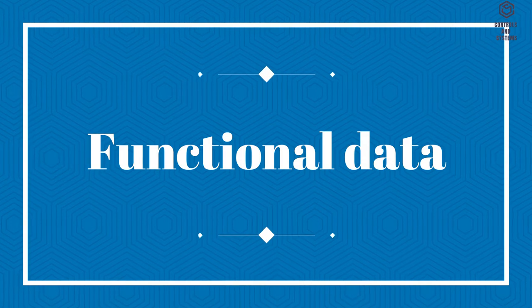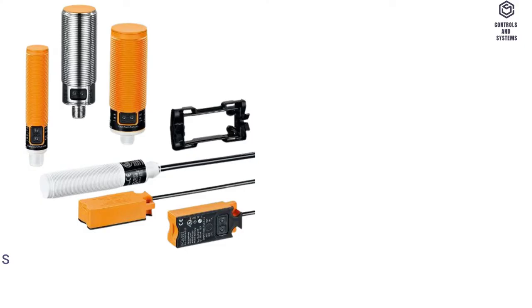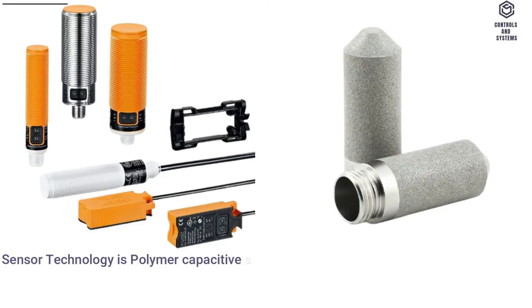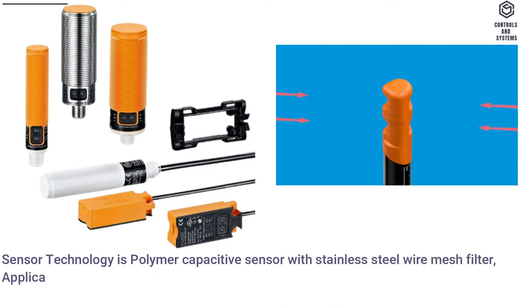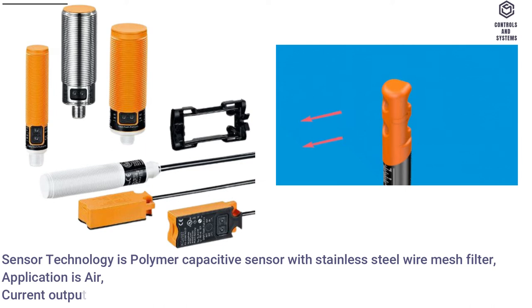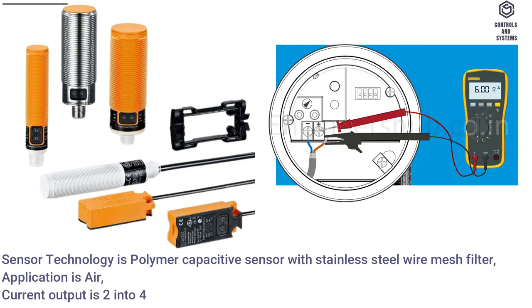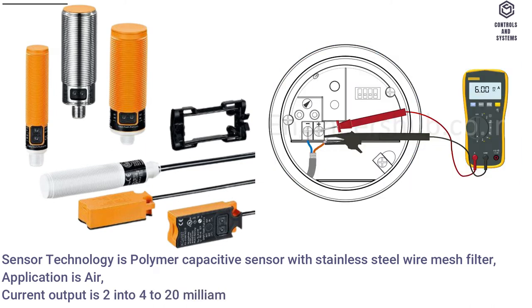Functional Data: Sensor technology is polymer capacitive sensor with stainless steel wire mesh filter. Application is air. Current output is 2× 4 to 20 milliamps. Maximum load is 500 ohm.